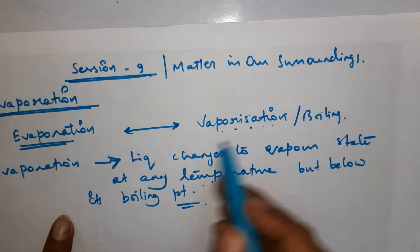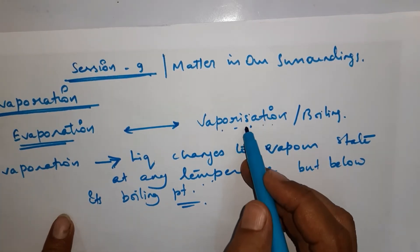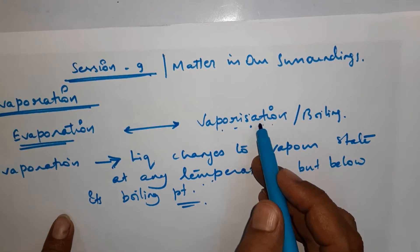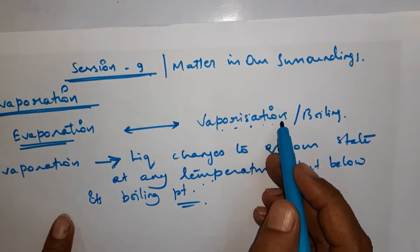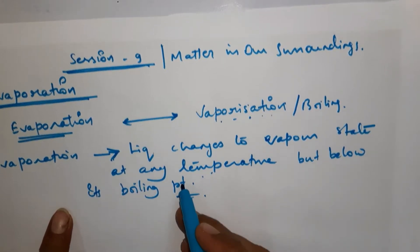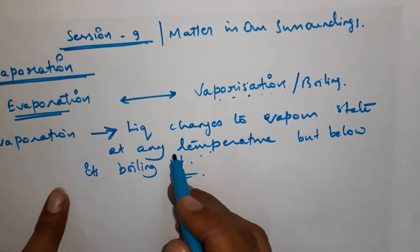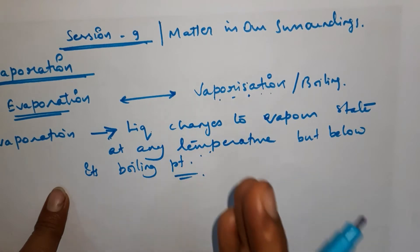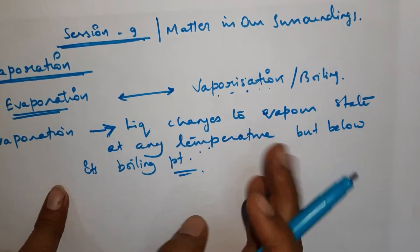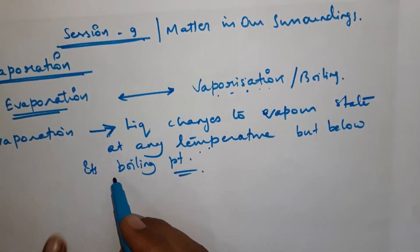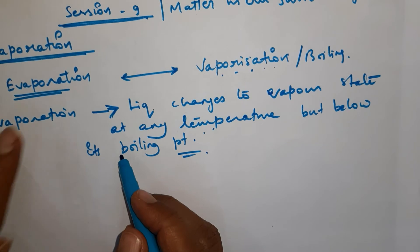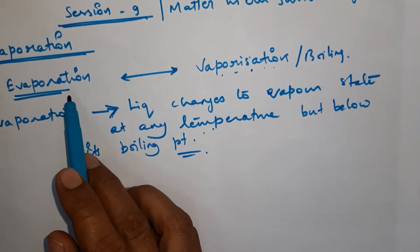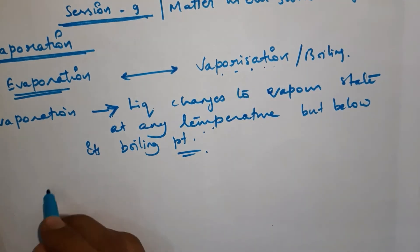To summarize: in vaporization, the boiling point is required — as soon as the boiling point is reached, vaporization starts and the liquid changes to vapor. But in evaporation, liquid changes to vapor at any temperature, but below its boiling point. Now, two things you have to keep in mind about evaporation.